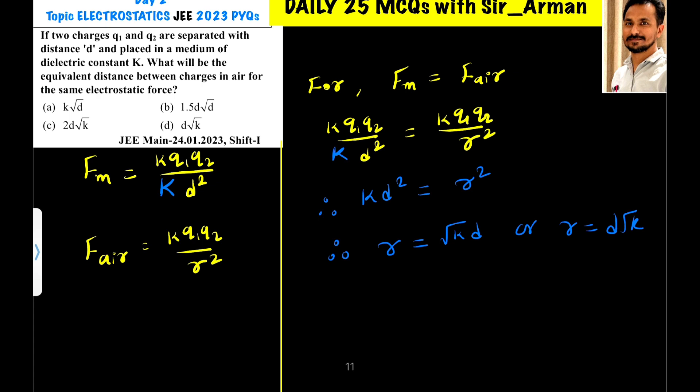Now, when the same arrangement is placed in water or in vacuum, then the force between them is given by equation k Q1 Q2 by r square.